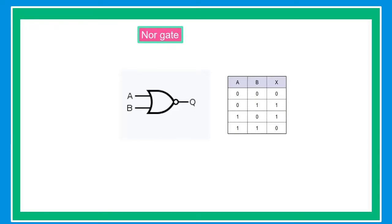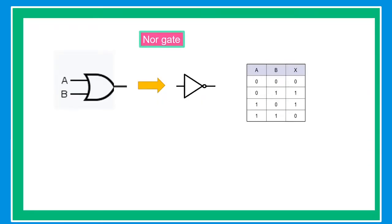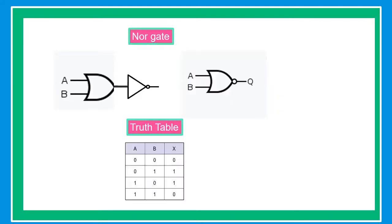Our next topic is the NOR gate. The NOR gate is an OR gate followed by a NOT gate, and this is the basic construction of the NOR gate. The truth table of the NOR gate: when A and B are both zero, the output is zero. When A is zero and B is one, the output is one. When A is one and B is zero, the output is one. And when A and B are both one, the output is zero.